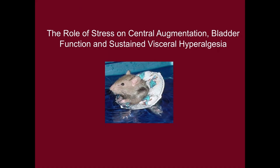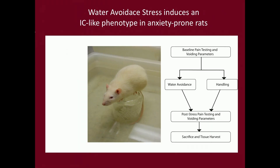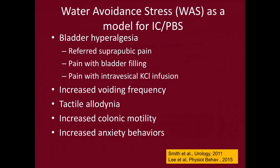We have tried to model this in the laboratory. We take rats that are genetically predisposed to stress and anxiety to model what these individuals experience, and we stress them out. We put them in a small container surrounded by water — now rats can swim; this is not cruel — but that stresses them out enough. We put them there for an hour a day in what we call water avoidance stress, and some animals we just handle as controls, and then we do a bunch of testing on them.